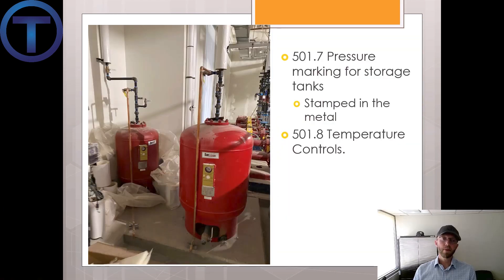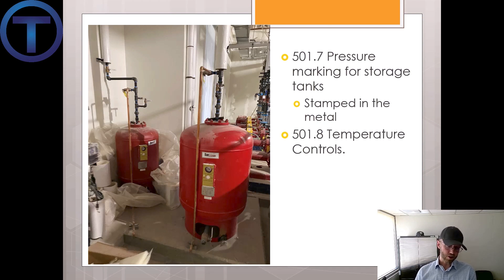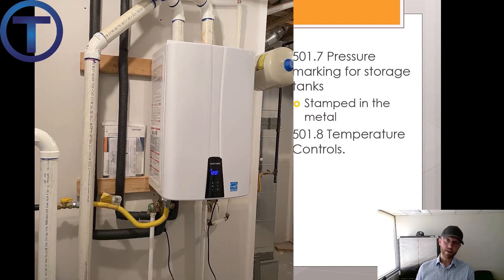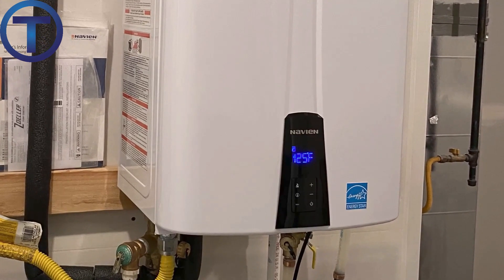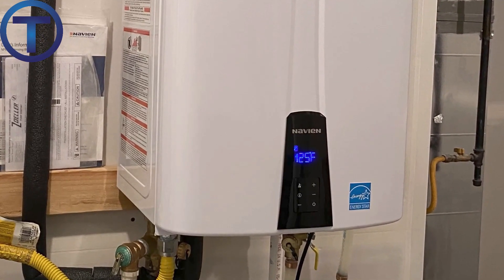In Section 501.7 we learn about pressure tanks and that they need to be marked and stamped — stamped right in the metal — indicating the maximum allowable working pressure for those storage tanks. Section 501.8 talks about temperature controls and says hot water supply systems shall be equipped with automatic temperature controls capable of adjustments from the lowest to the highest acceptable temperature settings for the intended operating range. So water heaters should have a control on them to adjust the temperature.